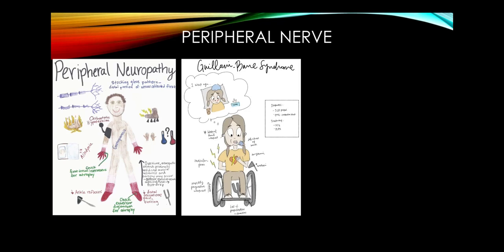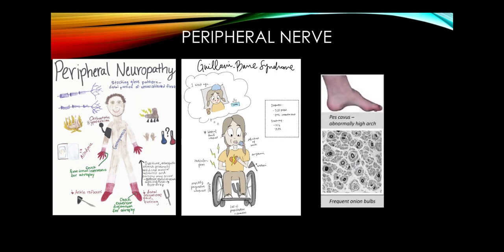Guillain-Barré syndrome is the classic acute peripheral neuropathy — a demyelinating condition where patients develop rapidly progressive weakness, often with facial weakness, after a preceding flu-like illness. Campylobacter jejuni is the bacterium to associate with GBS. Because it's lower motor neuron, patients have areflexia. Because it's demyelinating along sensory nerves, there's loss of vibration and proprioception with relatively preserved pain and temperature. Lumbar puncture shows very high protein, and EMG shows conduction block.